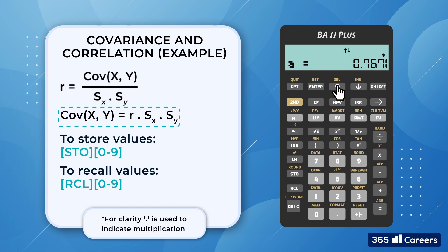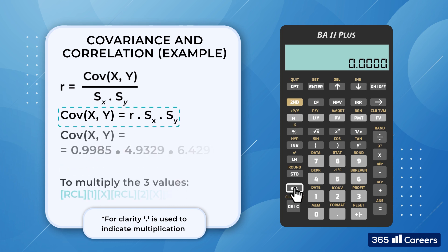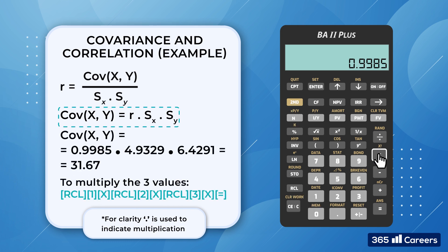Then we apply the same approach for the sample standard deviation of x and y. At the end, we press recall 1, followed by multiply, then recall 2, multiply, and recall 3 equals. To obtain the product of the three values, which is 31.67.